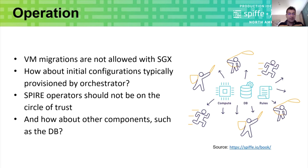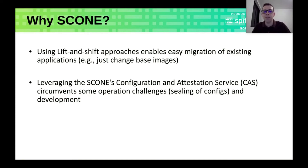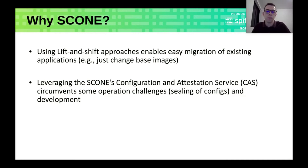I'll now pass to Mateus, who will talk about the current state of our development. Hi everyone, it's a pleasure to be here. The current status is that we are now supporting SGX workloads. Why SGX? Using lift-and-shift approaches like SCONE enables us to easily migrate existing applications — sometimes it's as easy as changing the base images in your Dockerfiles. Leveraging the SCONE configuration and how the attestation service CAS circumvents some operational challenges, mainly related to sealing and configuration, also saves effort in the development process.